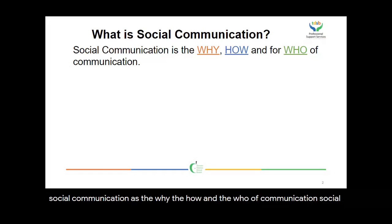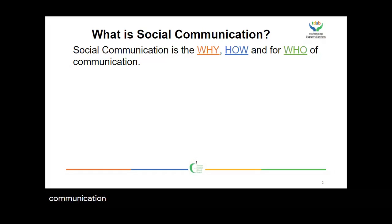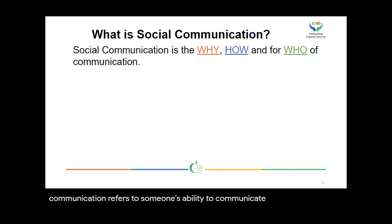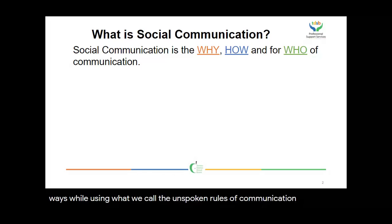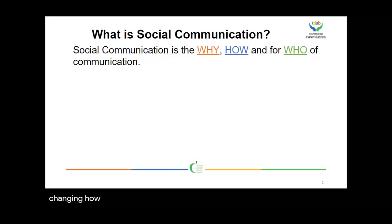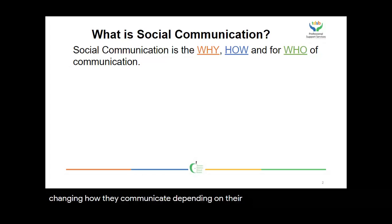Social communication refers to someone's ability to communicate in many different ways while using what we call the unspoken rules of communication and while changing how they communicate depending on their audience.